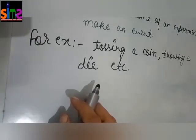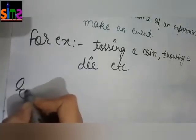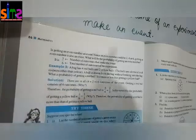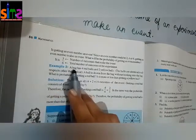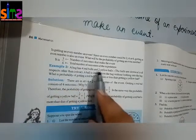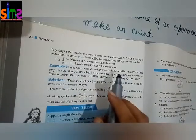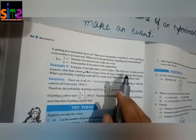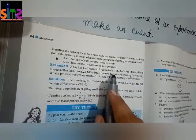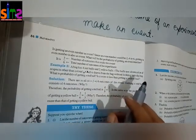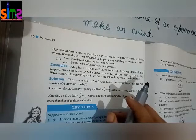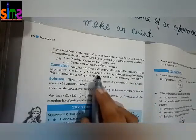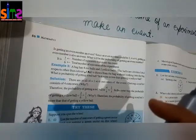Now, to clear the concept of probability, let's take an example. We have taken example number three from your book. As you can see, example number three: we are given that a bag has four red balls and two yellow balls. A ball is drawn from the bag without looking into the bag — meaning we haven't seen inside the bag, but we have drawn a ball out of it.